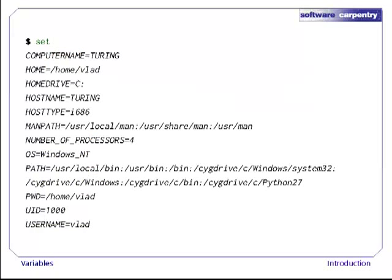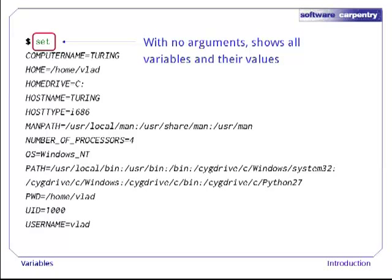Let's start by running the command set and looking at some of the variables in a typical shell session. As you can see, there are quite a few — in fact, four or five times more than what's shown on this slide. Using set to show things might seem a little strange, even for Unix, but if you don't give it any arguments, it might as well show you things you could set.